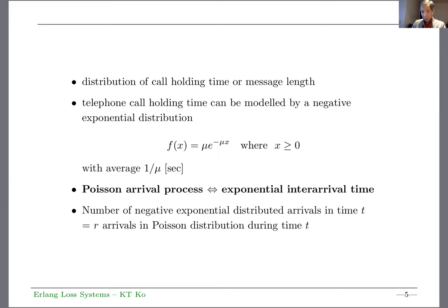The next topic is call holding time. How long subscribers talk is beyond the control of engineers, but we can measure and model it. For most telephone calls, the negative exponential distribution is accurate, where mu is the departure process. One over mu is the average time you speak on the phone, the average service time.